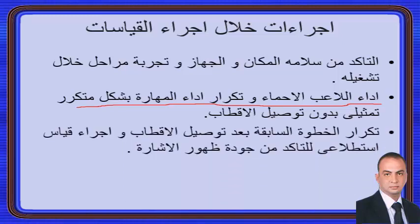بعد توصيل الأقطاب يُجري اللاعب قياساً استطلاعياً للتأكد من جودة الإشارة؛ لا توجد إشارة مقطوعة أو مشكلة في القطب أو التوصيل أو تعرق اللاعب. يؤدي اللاعب بشكل تمثيلي فقط دون انقباض كامل، لنتحقق من وصول الإشارة. بعد عدة محاولات تمثيلية يؤدي محاولة جدية بنسبة تسعين بالمئة من الأداء النموذجي للتأكد من وصول الإشارة سليمةً من كل العضلات للجهاز. ثم نبدأ القياس الفعلي بكامل القوة مع أخذ راحة مناسبة بين المحاولات.